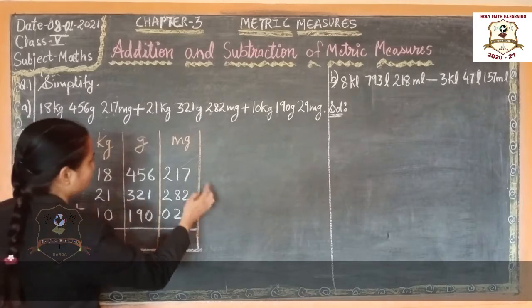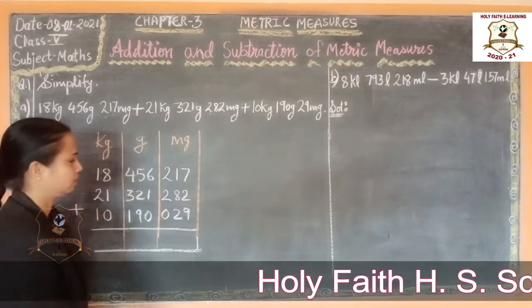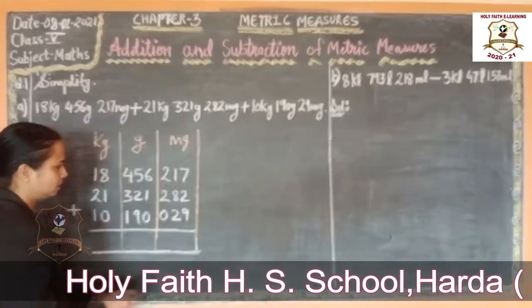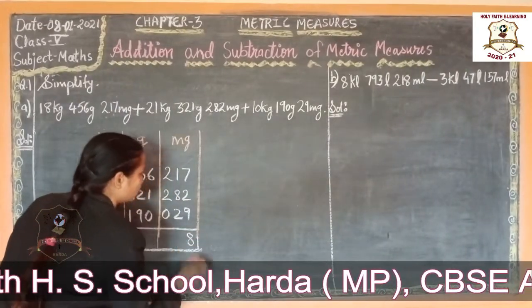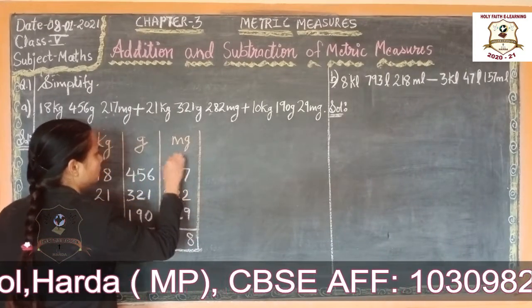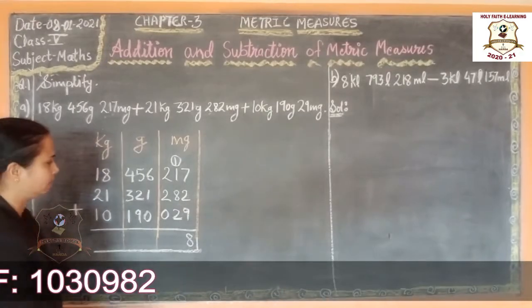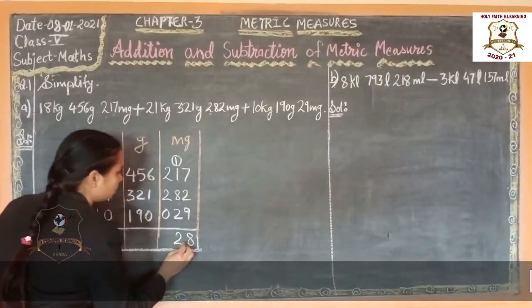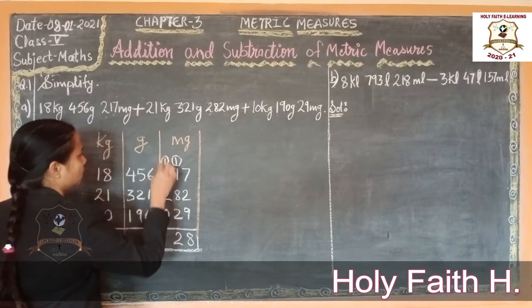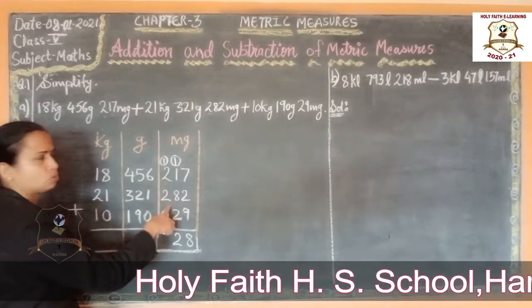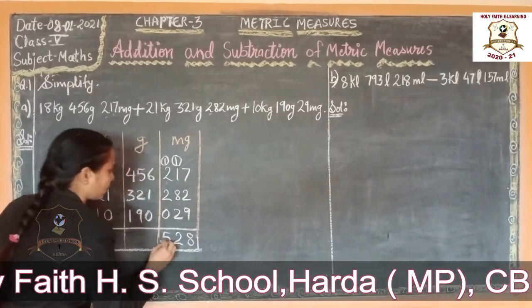Start from here. 7 plus 2, 9. 9 plus 9, 18. 8 right over here. 1 carry over here. 1 plus 1, 2. 2 plus 8, 10. 10 plus 2, 12. 2 right here. 1 carry over here. 1 plus 2, 3. 3 plus 2, 5.